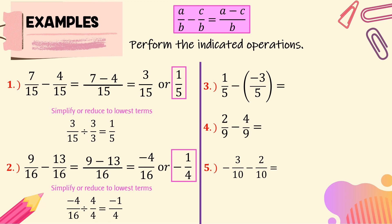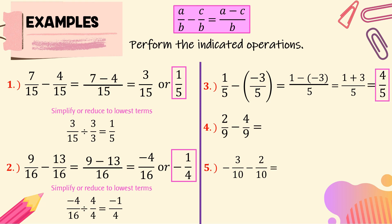For number 3, we have 1 over 5 minus the quantity negative 3 over 5. We subtract the numerators and copy the common denominator, 5. As you notice, we separate the minus and the negative using parentheses. We can multiply: negative times negative becomes positive. So it gives us 1 plus 3 over 5. Simplifying, 1 plus 3 equals 4 over 5, or 4 fifths. That is the final answer.